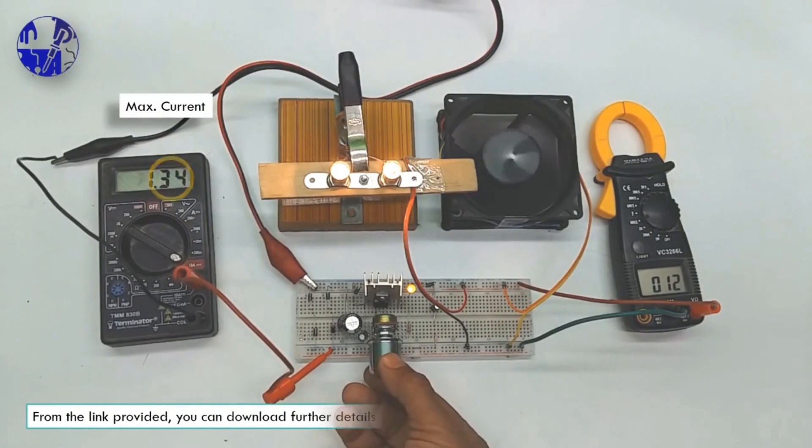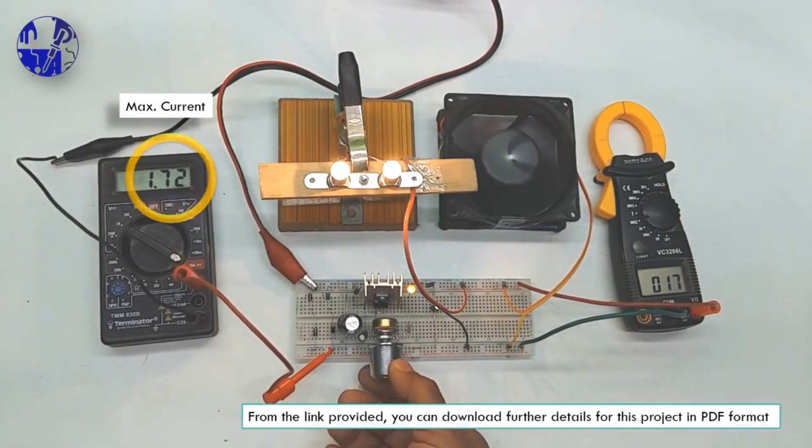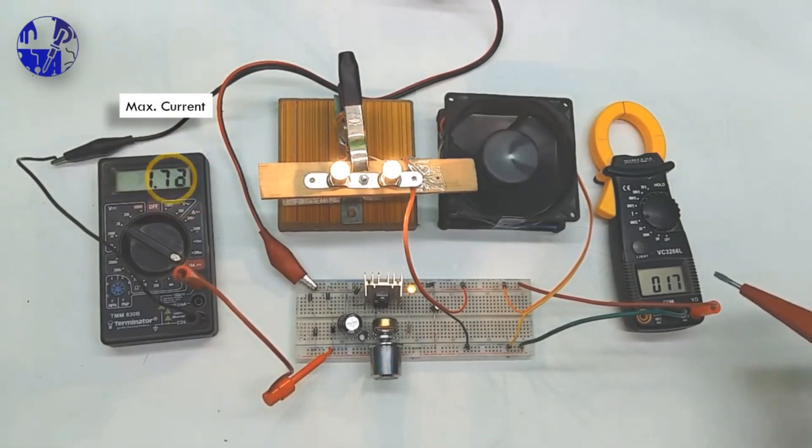You can put maximum load current of up to 1.5 ampere. The LM317 incorporates essential features like current limiting and thermal protection.